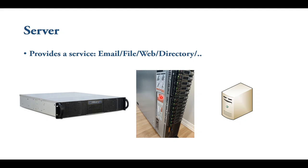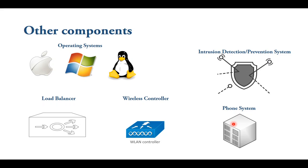Servers are represented like this on a network diagram. Other components include software components — for example, the operating system: is it a Windows computer, a Linux computer, or an Apple computer? You can also see load balancers. If you're running a service on multiple servers, you install a load balancer and it will balance incoming requests across your devices so one of them does not get overwhelmed.